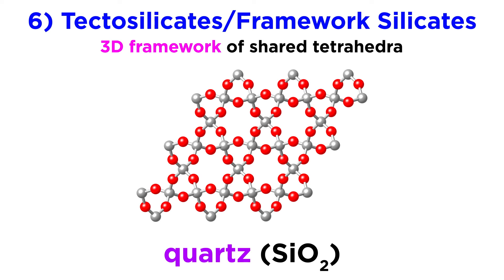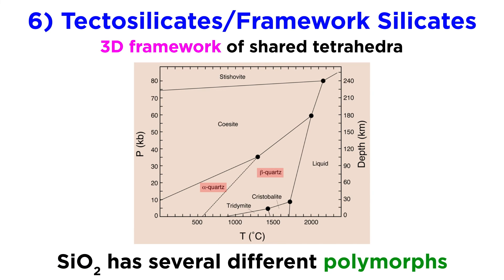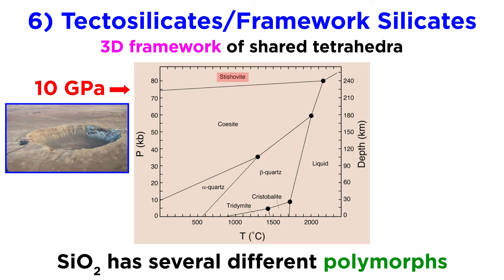Another important framework silicate is quartz, which is composed entirely of silica tetrahedra with the formula SiO2. The silicon-oxygen covalent bond is one of the strongest single bonds, making quartz and the other framework silicates very hard. Quartz is actually a polymorph of SiO2, meaning its structure changes with pressure and temperature. Tridymite and cristobalite are the high-temperature polymorphs, with coesite and stishovite being the high-pressure polymorphs. Stishovite can only be formed at pressures greater than 10 gigapascals, and is often used to identify ancient asteroid impacts.